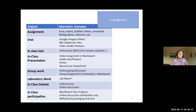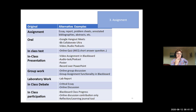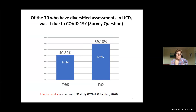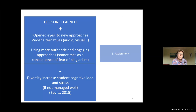In relation to assignments, there was a wide range of alternatives — oral presentations via Google Hangouts, recorded presentations, and many other types. In a study of 70 staff members, 40 reported they had diversified their assessments because of COVID-19. More diversification is generally better for diverse student needs.